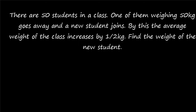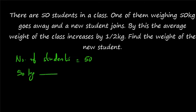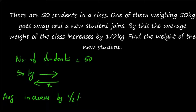One more question. There are 50 students in a class. One of them weighing 50 kg goes away and a new student joins. By this, the average weight of the class increases by half kg. Find the weight of the new student. Number of students is equal to 50. The 50 kg student is going out and another student will be joining. The average weight is increasing by half kg.